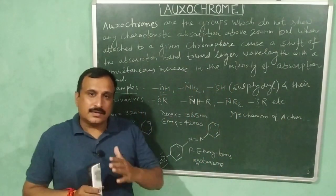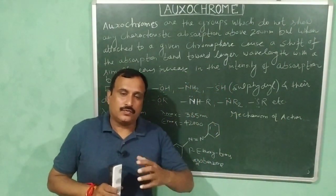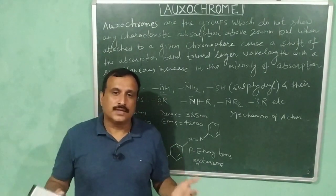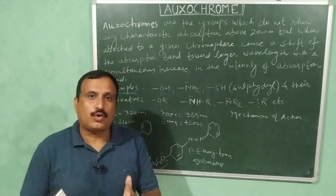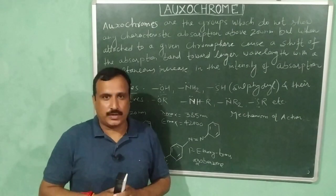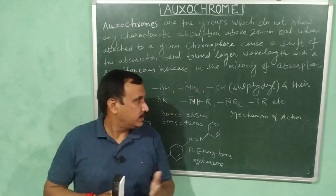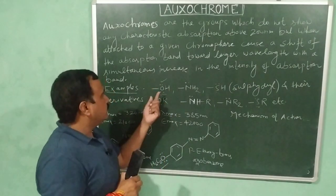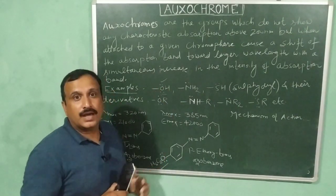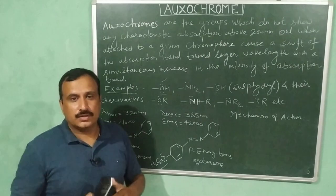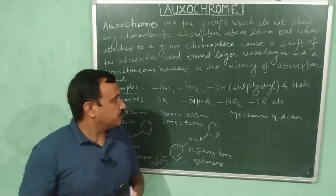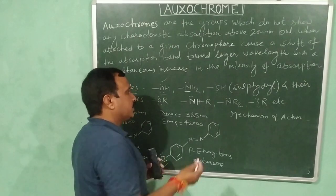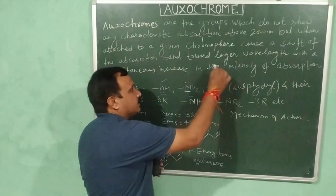It is the characteristic property of almost all oxochromes that they have non-bonding electrons present on their heteroatoms. For example, the oxygen atom has non-bonding electrons or lone pairs of electrons. Likewise, nitrogen and sulfur also have non-bonding electrons.